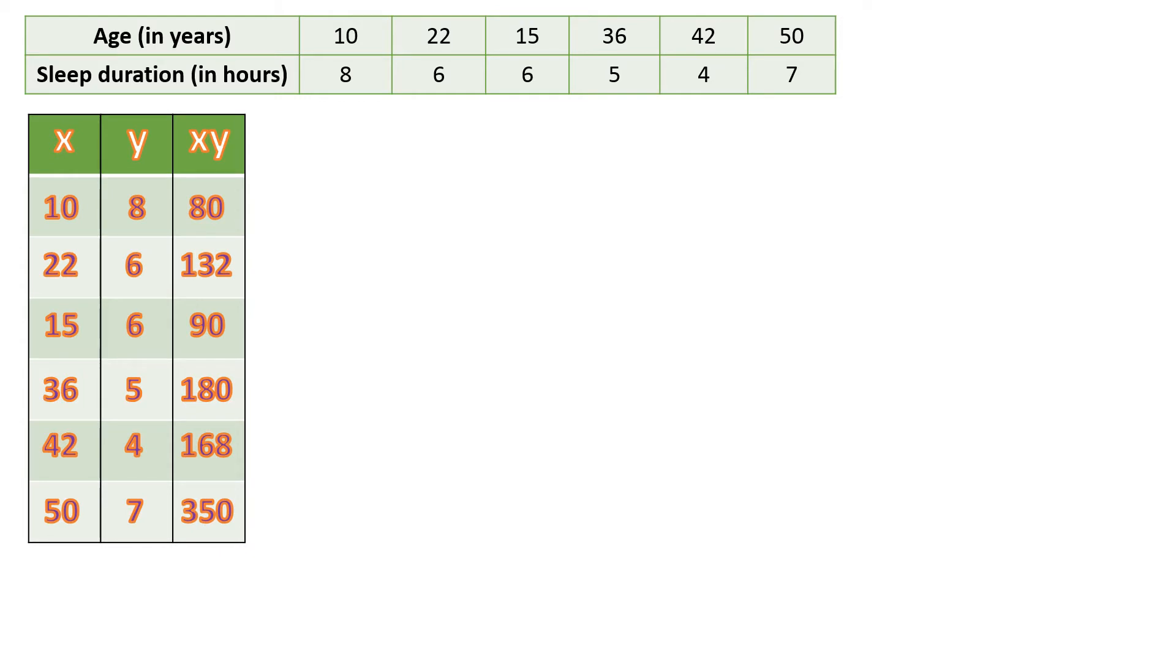After this column, we're going to add another column, the square of X. We're going to multiply every X by itself. 10 squared is 100, 22 squared is 484, 15 squared is 225, 36 squared is 1296, 42 squared is 1764, and 50 squared is 2500.